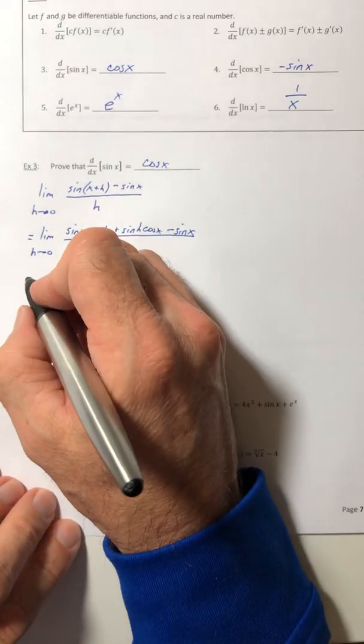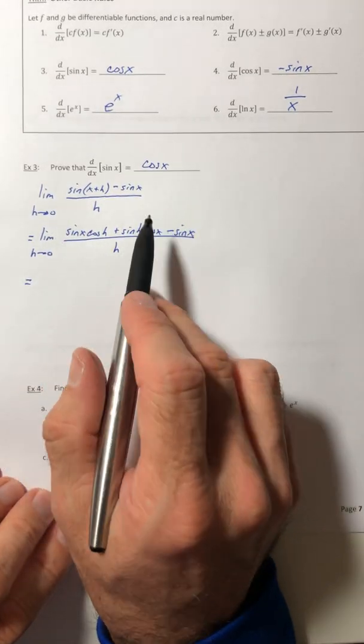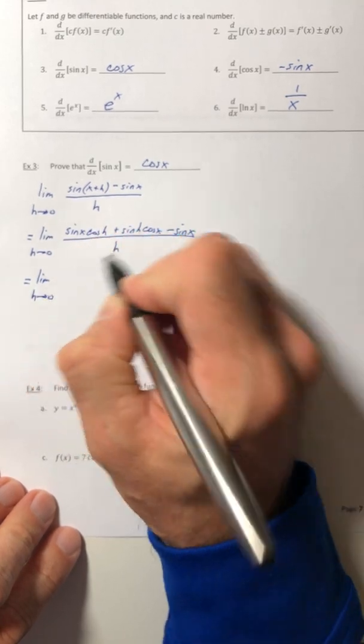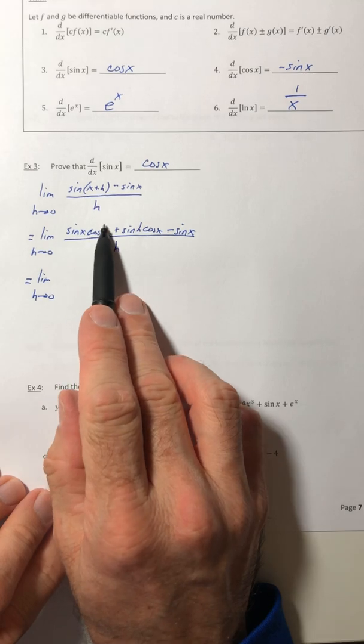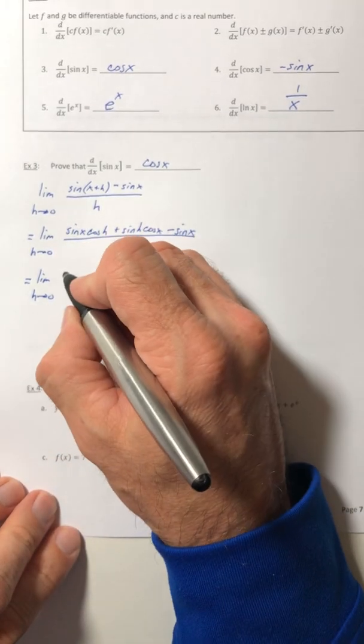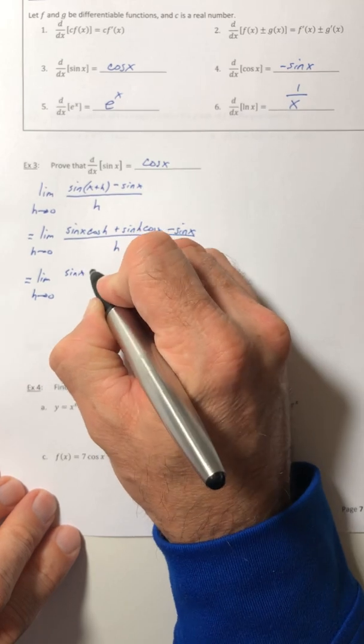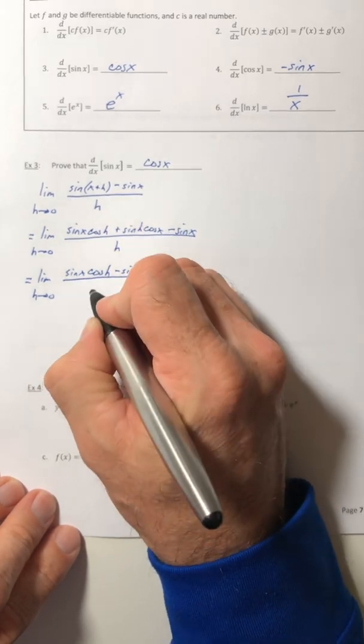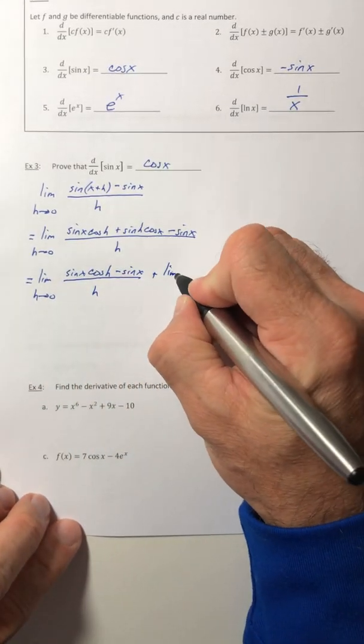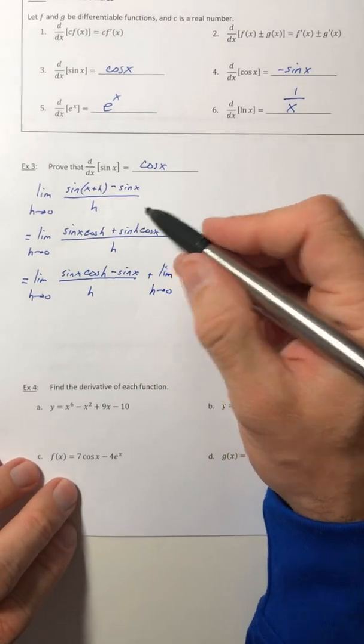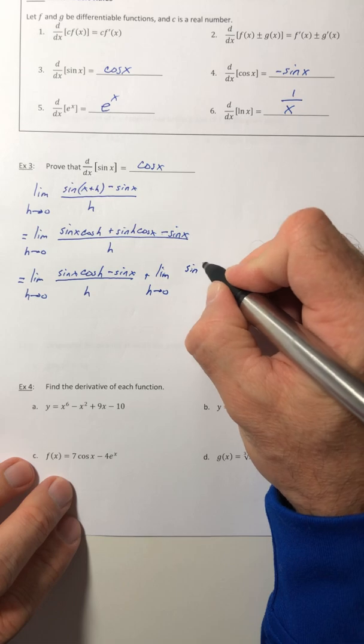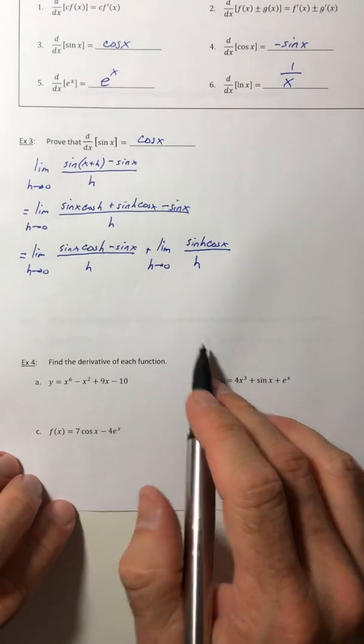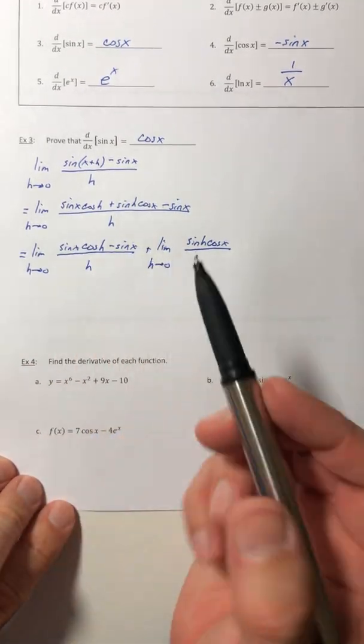All over h. And then from here we're going to kind of reorganize and break things up. So I'm going to break it up into two fractions, each with its own limit. And I'm going to take the first term and the third term together in one fraction, and then I'm going to take the second term.